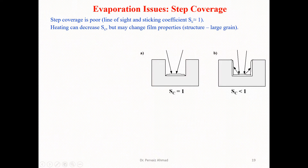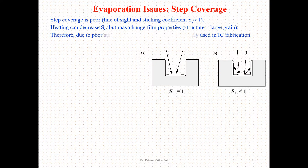Heating can increase the sticking coefficient, but may change film properties such as grain size — specifically, it can produce larger grain sizes instead of smaller ones. Due to poor step coverage and X-ray damage, evaporation is rarely used in IC fabrications.